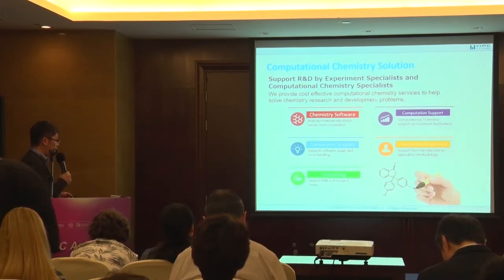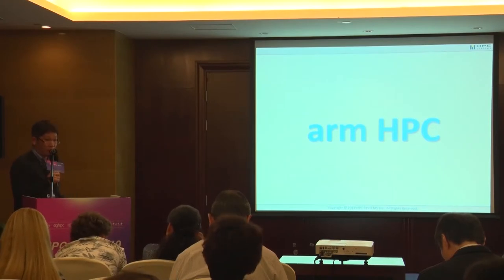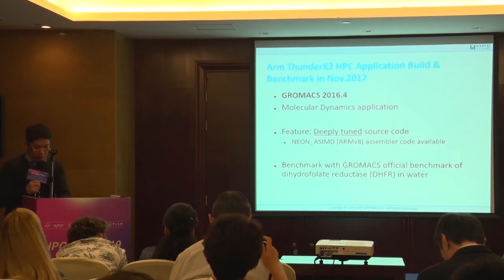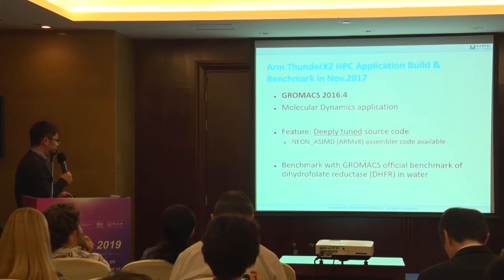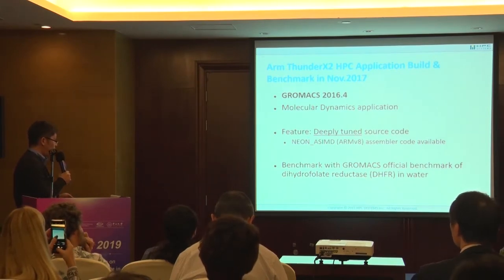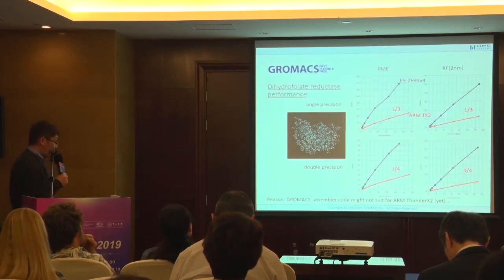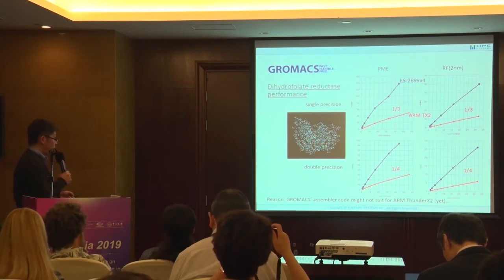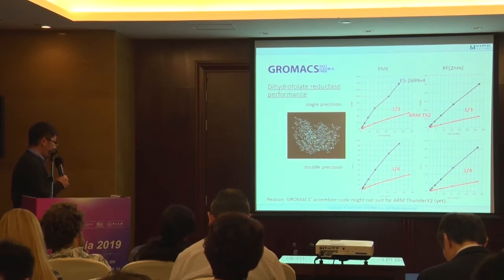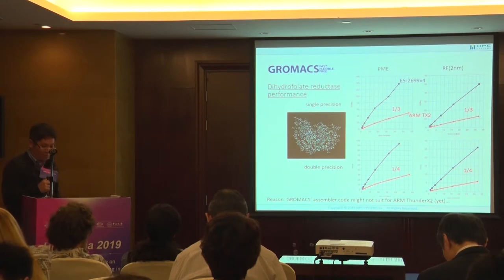For ARM HPC, we have been working with ARM architecture since 2017. In November 2017 — almost two years ago — using ThunderX2, we deeply tuned the NEON SIMD assembly code and did benchmarking for GROMACS in water. We compared single precision and double precision performance against Intel Broadwell with Sandy Bridge 2. Using single precision was on par, but double precision was about one-fourth the performance. We think the GROMACS assembler code may not yet be optimized for ARM SIMD, so we are waiting for a future GROMACS release to achieve better performance.